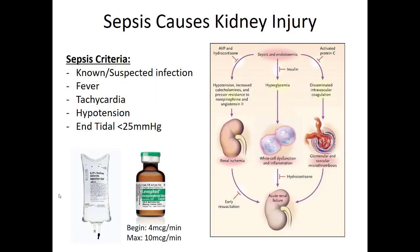Sepsis is one of the leading causes of kidney injury we'll see in the pre-hospital setting. This is due to an infection — typically patients will have fever, tachycardia, and hypotension. Look for end-tidal CO2 less than 25, which indicates too much acid building up in their blood. If you suspect septic shock and they're not getting better with fluids, remember that initiating a pressor is going to help bring up blood pressure and deliver more blood flow to the kidney so it can filter out waste.